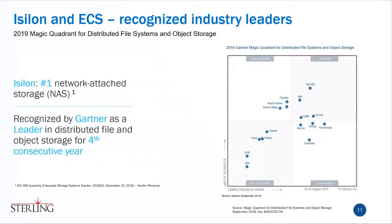And what would a webinar be without a Gartner slide? Isilon is the recognized leader in scale-out NAS. It's the number one NAS platform — over 10,000 organizations are using Isilon to store and manage their unstructured data. For four years in a row, Gartner has recognized Dell EMC as a leader in the Magic Quadrant for distributed file systems and object storage. On the chart they're way up above everyone else and far to the right — clearly leading the quadrant and substantially ahead of competitors in ability to execute.